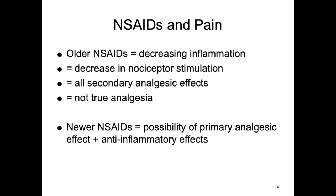Older NSAIDs reduce discomfort and pain primarily by decreasing the five signs of inflammation — working on a secondary basis. They didn't directly stop pain perception in the brain and had very little true analgesic effect at the CNS level. However, newer NSAIDs appear to have an additional analgesic effect that can't be explained by anti-inflammatory activity alone. Some of them have dual action: reducing inflammation and also providing a true primary analgesic effect.